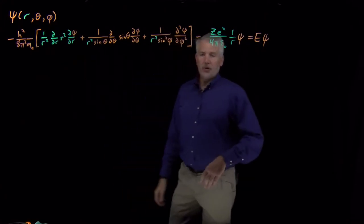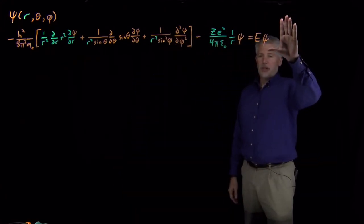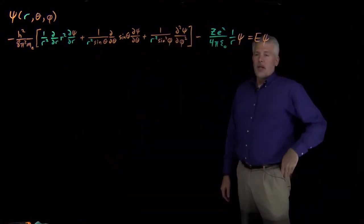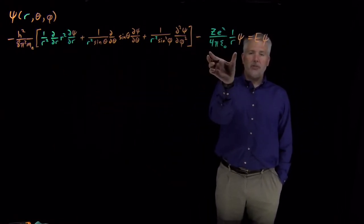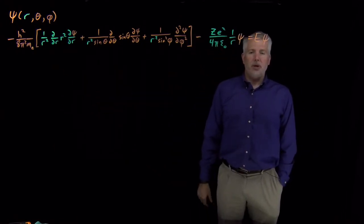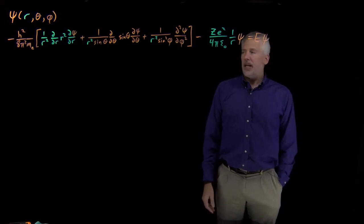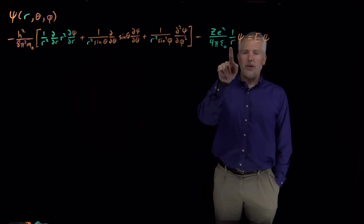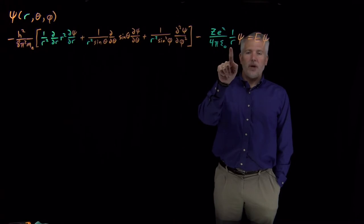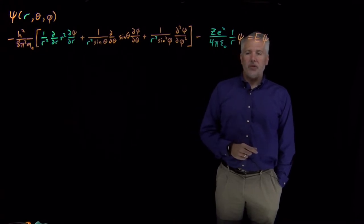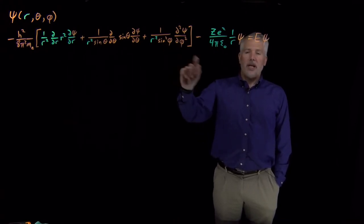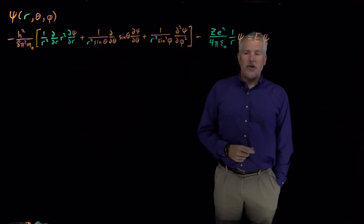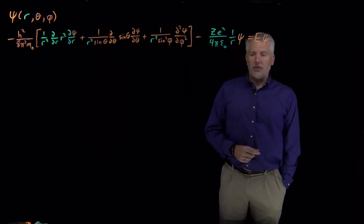The full Schrödinger equation is this long equation written here. There's a kinetic energy term in brackets and a potential energy term that describes the Coulomb energy of the electron interacting with the nucleus. The terms that depend on the radial coordinate are written in green, and the terms that depend only on the angular coordinates are written in orange.